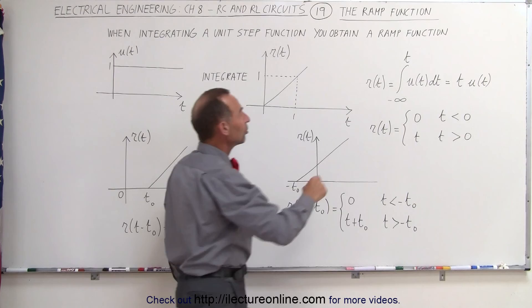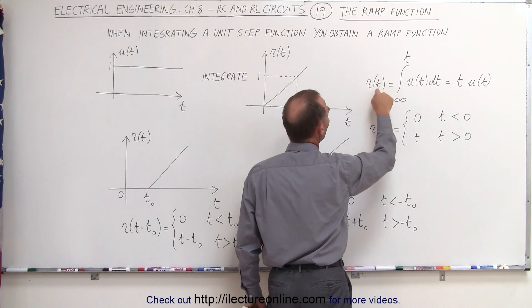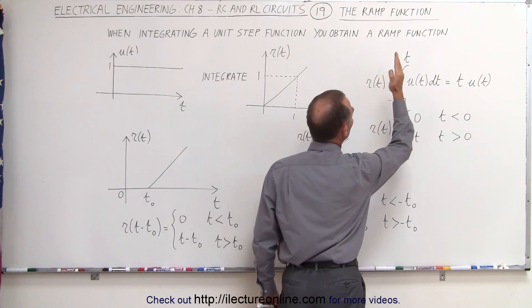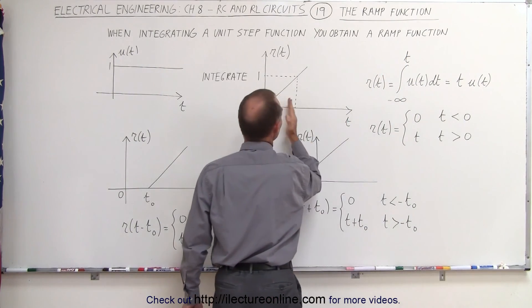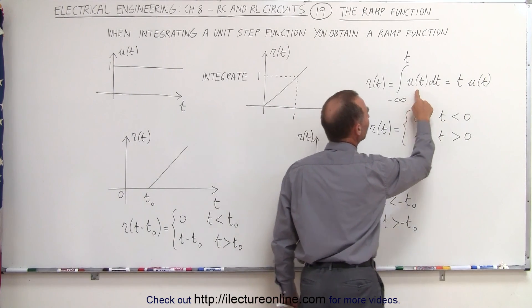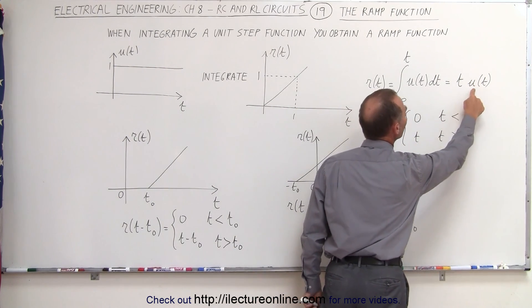The equation looks as follows. We obtain what we call the ramp function when we integrate from minus infinity to a particular point in time. Whatever that time is along the time function of the unit step function we end up with t times the unit step function.